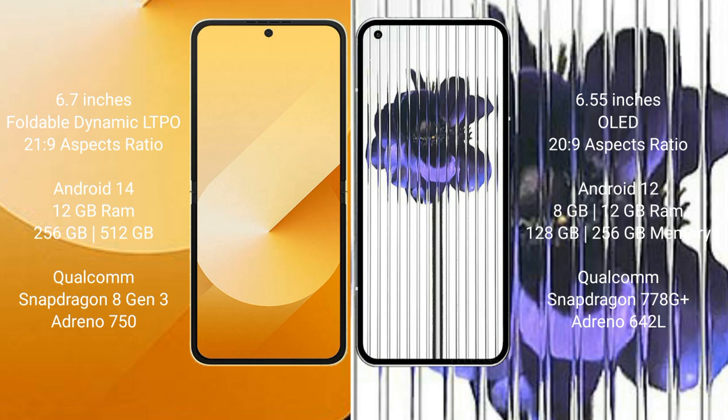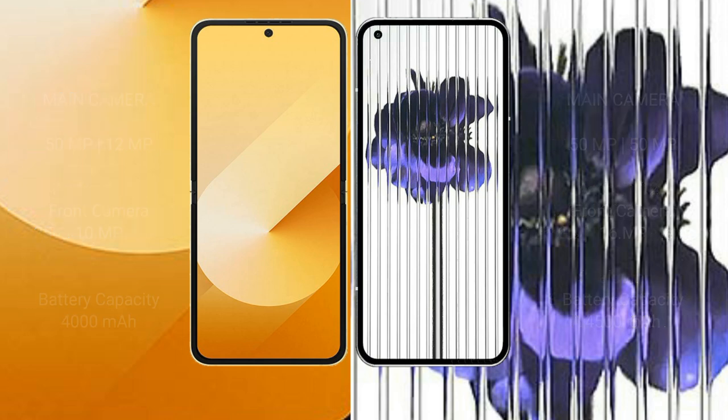Nothing Phone 1 comes with 8GB or 12GB RAM and 128GB or 256GB internal storage, with a Snapdragon 8+ Gen 1 processor and Adreno 642L GPU.